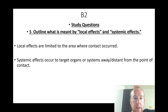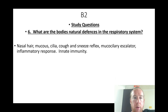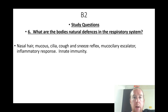What are the body's natural defenses in the respiratory system? Nasal hair, mucus, cilia, cough and sneeze reflex, mucociliary escalator, inflammatory response, and innate immunity.